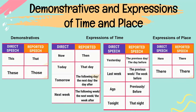Next, demonstratives and expressions of time and place. For demonstratives: 'this' becomes 'that,' 'these' becomes 'those.' Expressions of time: 'now' becomes 'then,' 'today' becomes 'that day,' 'tomorrow' becomes 'the following day / the next day / the day after,' 'next week' becomes 'the following week / the next week / the week after,' 'yesterday' becomes 'the previous day / the day before,' 'last week' becomes 'the previous week / the week before,' 'ago' becomes 'previously / before,' 'tonight' becomes 'that night.' For expressions of place: 'here' becomes 'there,' and 'there' remains the same.